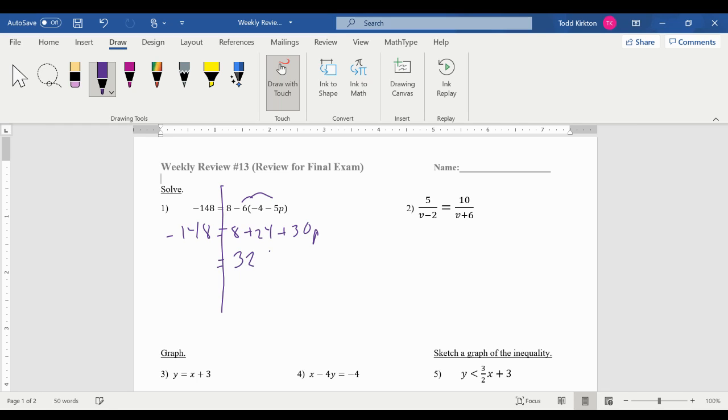So the 8 and 24 is 32 plus 30p equals negative 148. Get variables on one side, numbers on the other. So we have 30p equals negative 180 divided by 30, p equals negative 6.